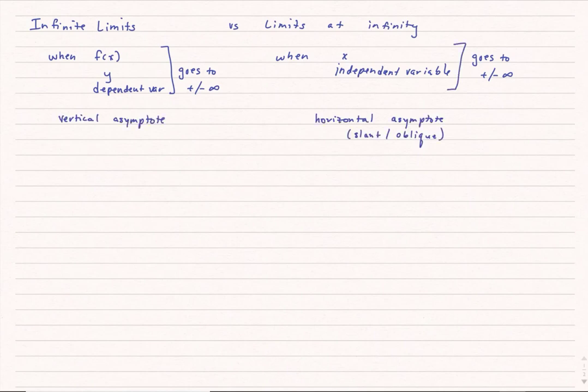We can extend this: infinite limits relate to vertical asymptotes, while limits at infinity relate to horizontal asymptotes. There are also slant and oblique asymptotes, but we won't be going into those very much.